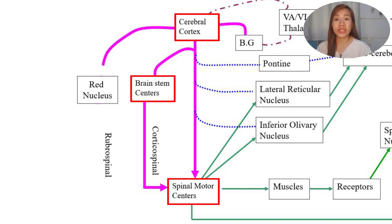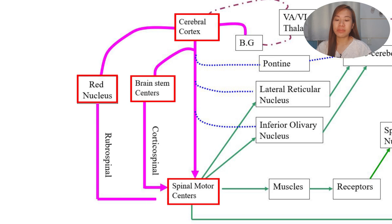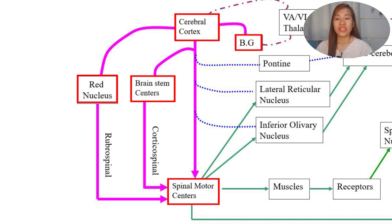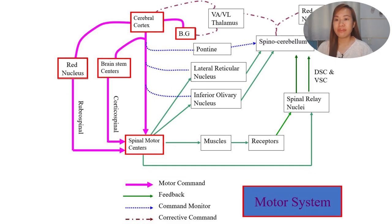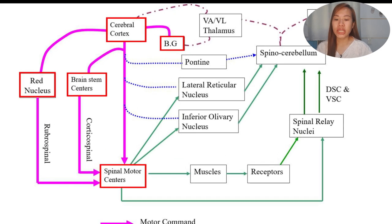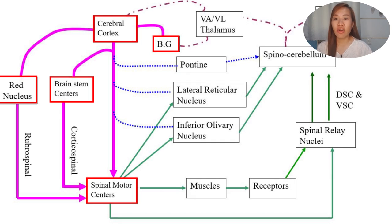There's another pink solid line going first to the red nucleus, and then from the red nucleus going to the spinal cord. From the cerebral cortex there's another pink solid line - a motor command - going to the basal ganglia. We'll understand how this motor command functions and how we are able to move our body. There's also a feedback mechanism represented by the green lines, which we'll talk about in another lecture. The blue dotted lines are command monitors, checking on whether the motor function being done is correct and precise.